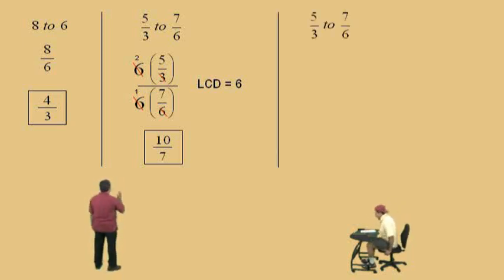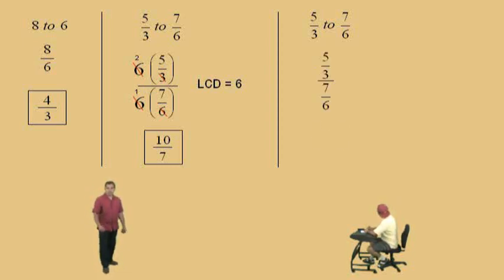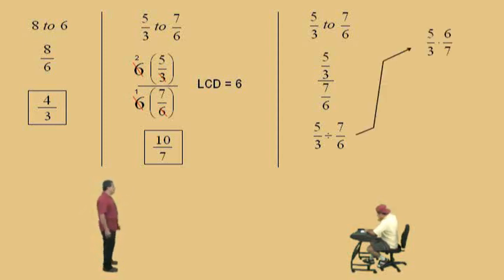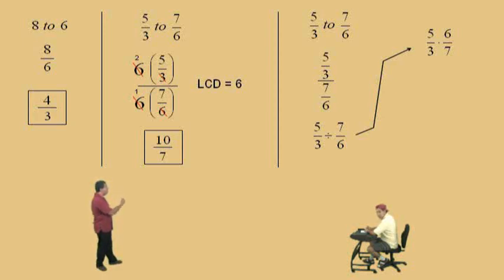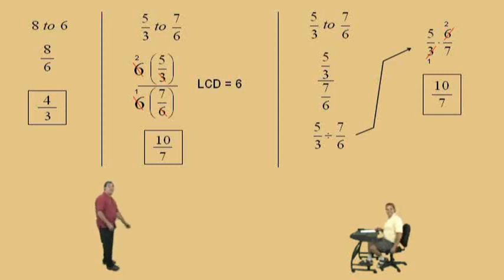Let's continue now. It's the same problem, but we're going to use a different approach. We now write 5 thirds over 7/6, but now we're going to write it as a division problem. Some people like to do this — you're going to get the same answer. Now remember Charlie, what happens when you divide with a fraction? Multiply by its reciprocal. Very nice, and notice 5 thirds times 6 over 7. The 6 and the 3 can reduce — some people call that cross-cancelling — and it reduces as 2 over 1, so what's our answer? 10 over 7. Very nice, it's the same answer, of course.